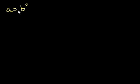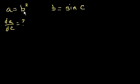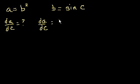So let's say that a is equal to b squared, and that b is equal to the sine of c. My question to you is: what is the derivative of a with respect to c? That's where the chain rule comes in. The chain rule tells us that the derivative of a with respect to c is equal to the derivative of a with respect to b, times the derivative of b with respect to c.